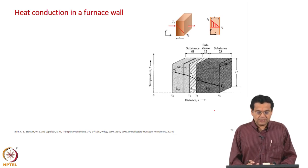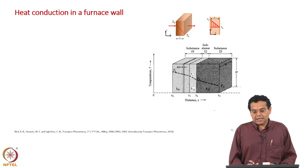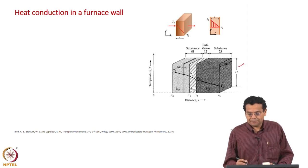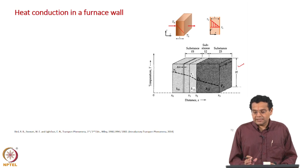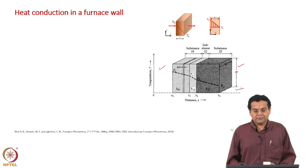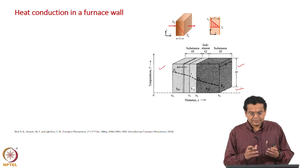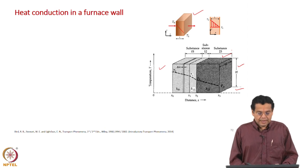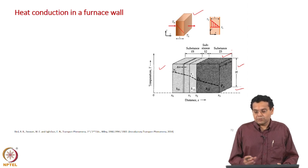Usually furnace walls are made of several layers and they are made of materials which have low thermal conductivity so that they can provide good insulation, and that is what is shown here as a series of slabs. We can imagine this to be a furnace wall with high temperature on one side and low temperature on the other. Our objective is to extend the discussion for a single slab to multiple slabs and find out the heat flux through a series of slabs.